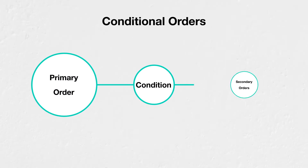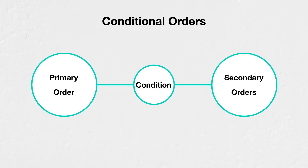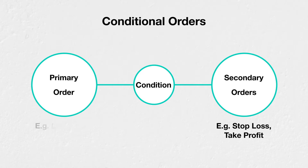A conditional order is an order whose behavior is conditional on what happens to another order. For example, we may have a stop-loss order and a take-profit order that are both only placed once a primary order has been filled. On some platforms, wrapping the primary order with these secondary orders is known as bracketing.